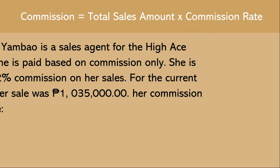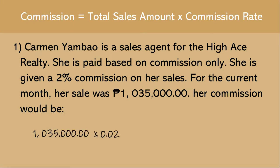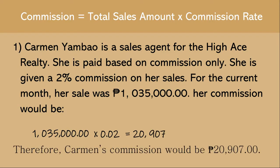Here are some examples on solving commissions. Carmen Yambao is a sales agent for High Ace Realty. She is paid based on commission only and is given a 2% commission on her sales. For the current month, her sale was 1,035,000 pesos. Since commission equals total sales amount multiplied by commission rate, we multiply 1,035,000 by 0.02, which gives us 20,700. Therefore, Carmen's commission would be 20,700 pesos.